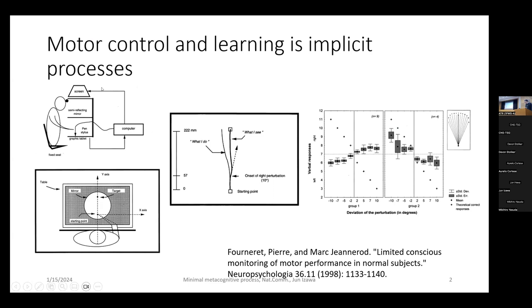This is a typical setting for a motor control experiment, where a subject is asked to manipulate something like a pen tablet to draw a line or control a cursor. The hand is typically occluded by a mirror or screen, and instead of seeing the actual hand position, the subject sees a projected hand position from a monitor.